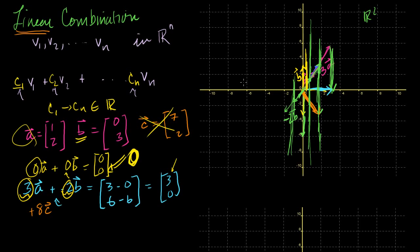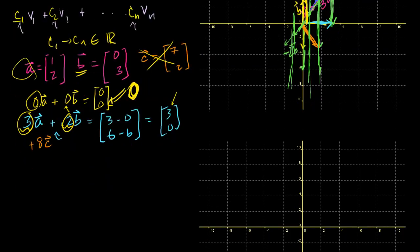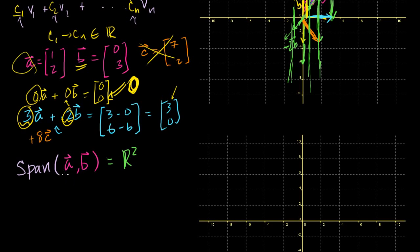We can fill up any point in R2 with combinations of A and B. So what we can write is that the span of vectors A and B equals R2 — all the vectors in R2, which is all ordered tuples of two real numbers. This just means that I can represent any vector in R2 with some linear combination of A and B.